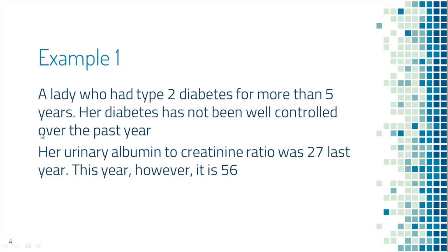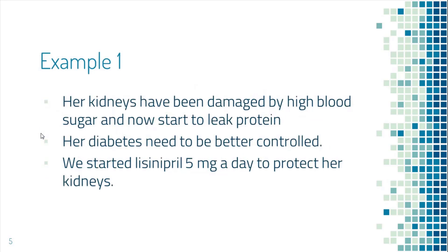Now let's look at an example. This is a lady with type 2 diabetes for more than five years. Her diabetes has not been well controlled over the past year — her A1c has always been above 7, sometimes even above 9. Her urinary albumin to creatinine ratio was 27 a year ago, and now it's 56. Her kidneys have been damaged by the high blood sugar and are now starting to leak protein. She really needs to control her diabetes better, and we started lisinopril 5 mg a day to protect her kidneys.